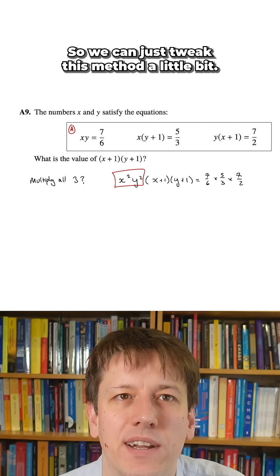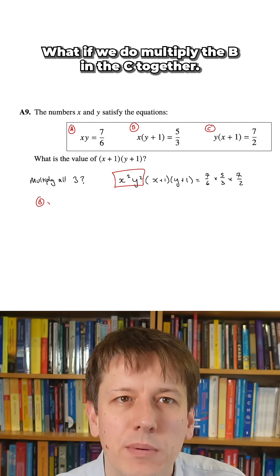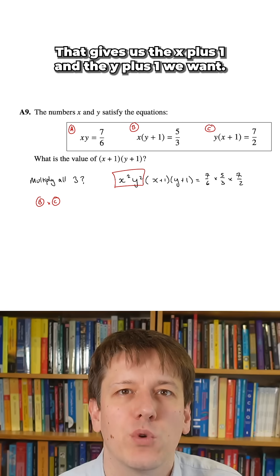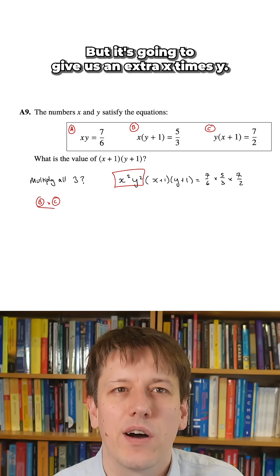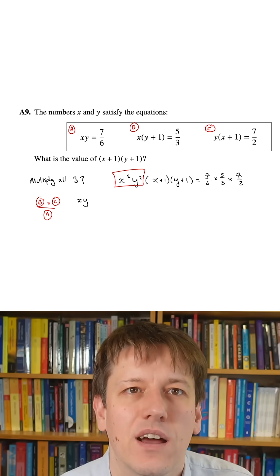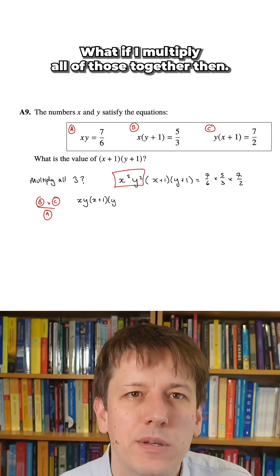So we can tweak this method a little bit. If I call these equations a, b, and c, what if we multiply b and c together? That gives us the (x+1) and (y+1) we want, but it's going to give us an extra xy. So instead, if we divide by equation a that's got xy in it, then b times c divided by a will give us the (x+1)(y+1) we want, and the xy will cancel out.